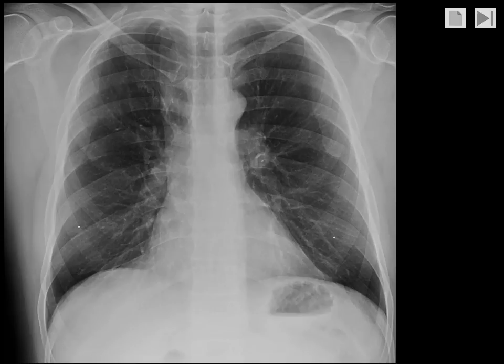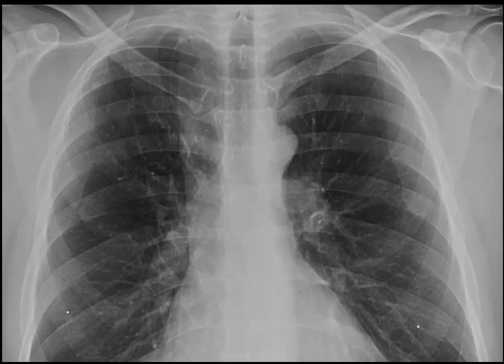Here is another patient, this time a man. We can see a widened edge on the right side of the mediastinum, and just lateral to it, we see a very thin white line. If we magnify this, we can see the edge of the superior vena cava.